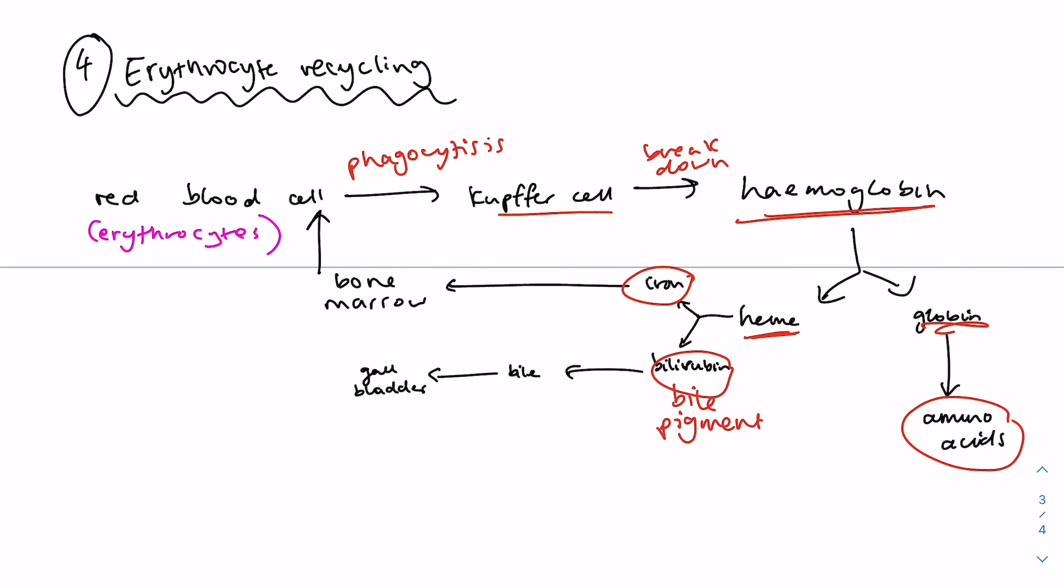The released iron must be complexed with a protein in order to avoid oxidation into a ferric state. The iron can be stored by the liver within a protein shell of ferritin or it can be transported to the bone marrow where new hemoglobin is produced within the protein transferrin.